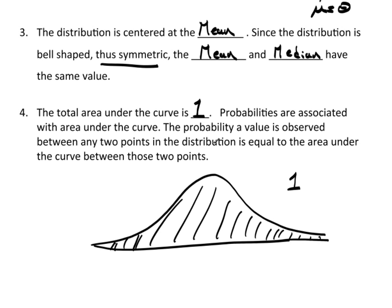Now, that's kind of important because probability is associated. The probability is actually associated with the area under the curve. And the probability of a value is observed between any two points in the distribution is equal to the area under the curve.